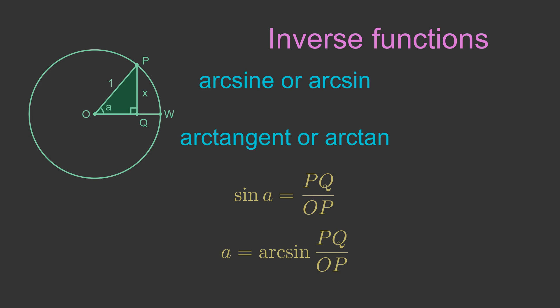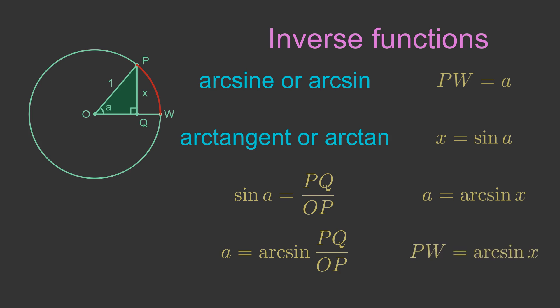So where does the term arc come from? An arc is part of the circumference of a circle. If we use radians to measure the angle at the centre of a unit circle, then the length of the arc it creates is equal to the angle. So in this case, the length of the arc PW is equal to the angle A. We know that X is equal to the sine of angle A, so angle A is equal to the arcsine of X. The arc length of PW is equal to A, so the arc length is equal to the inverse sine of X. So we call the inverse sine the arcsine. The same notation is used for the other trig functions.